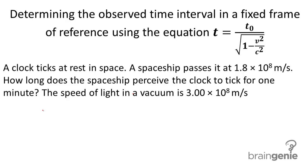So a spaceship is passing by this clock. We want to know how much time passes on this clock when we have another clock on the spaceship that ticks for one minute. I'm kind of just drawing the situation so we fully understand it. So the clock in space ticks for 60 seconds, the clock on the spaceship that's moving.